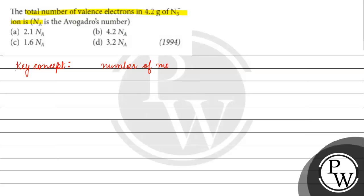The key concept for this question is: number of moles equals mass divided by molar mass, and it also equals the number of elementary entities divided by Avogadro's number.